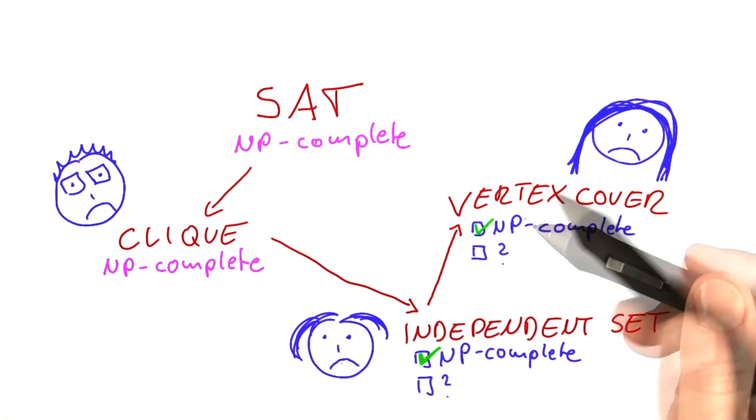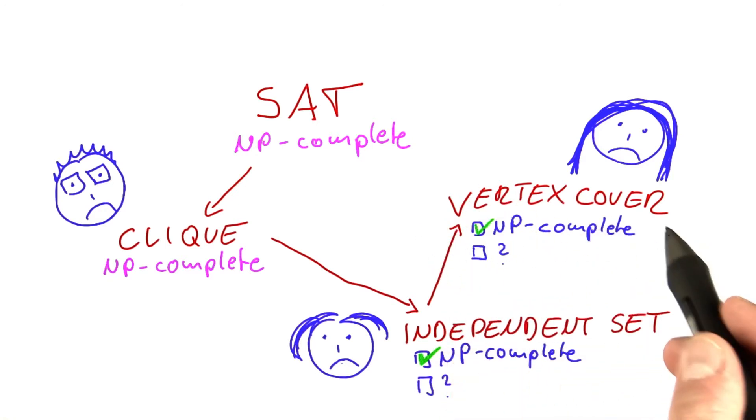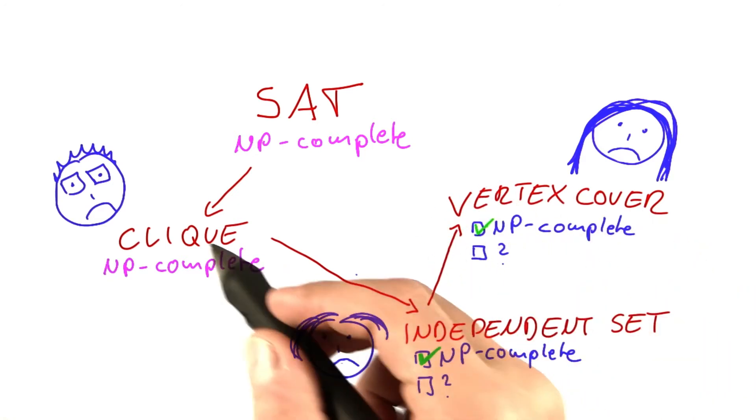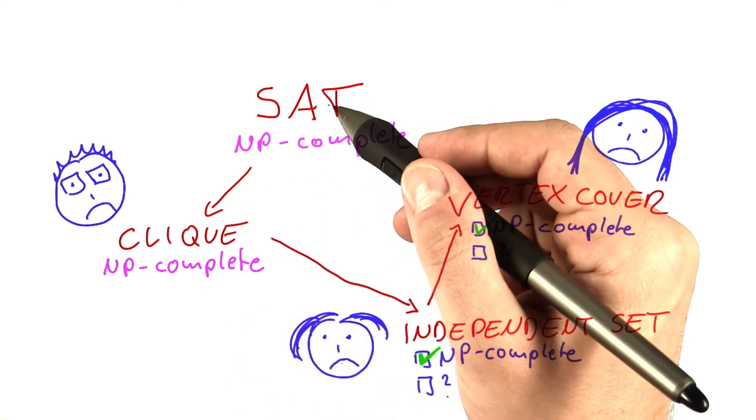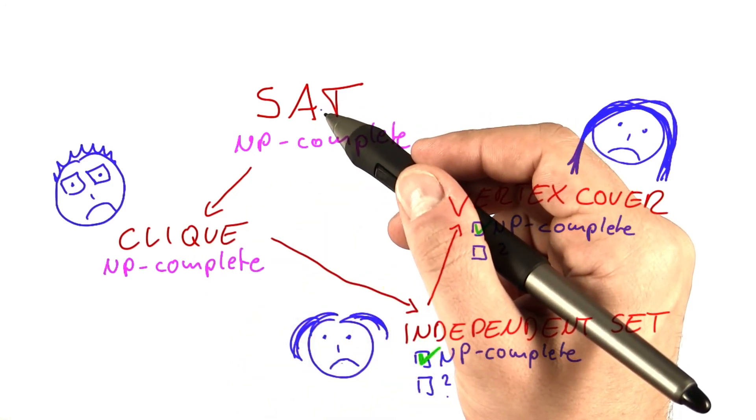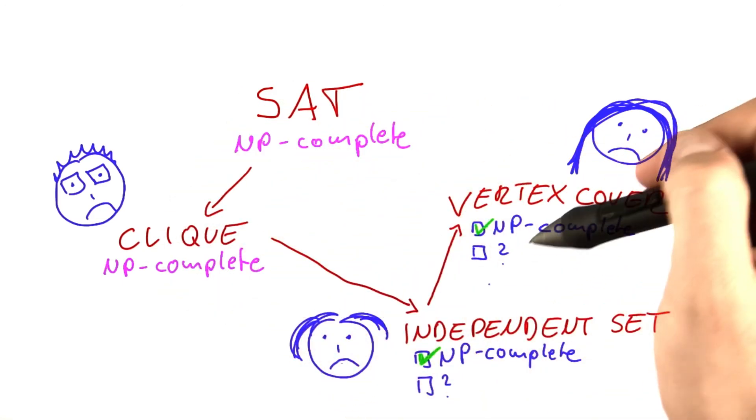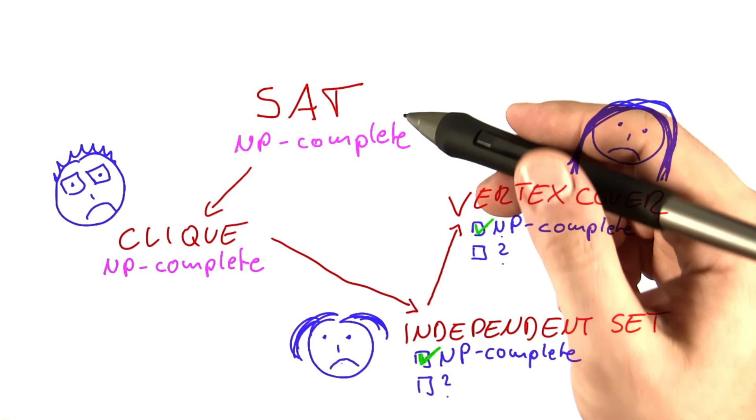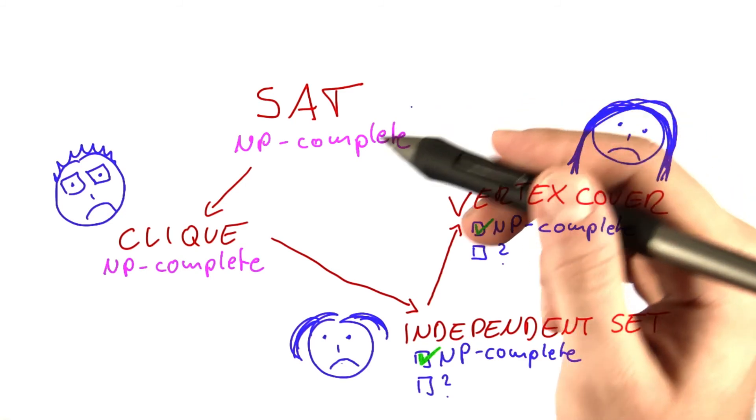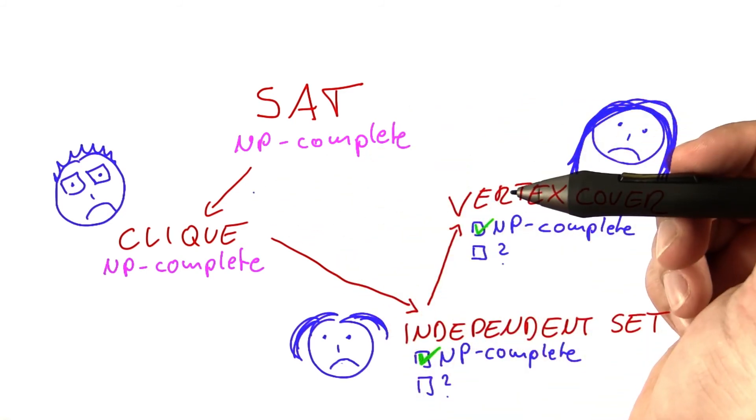Or in other words, if you found a polynomial time algorithm for vertex cover, independent set, clique, or SAT, what this would mean is that you have found a way to simulate the if-better function in polynomial time. You can simulate a non-deterministic RAM on a deterministic RAM in polynomial time.